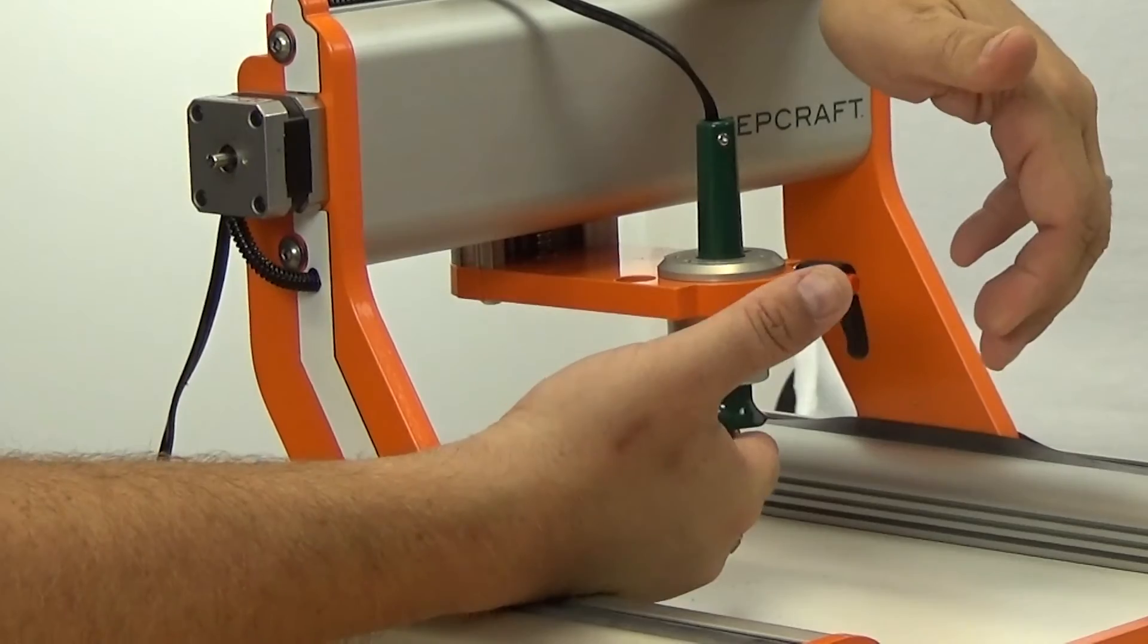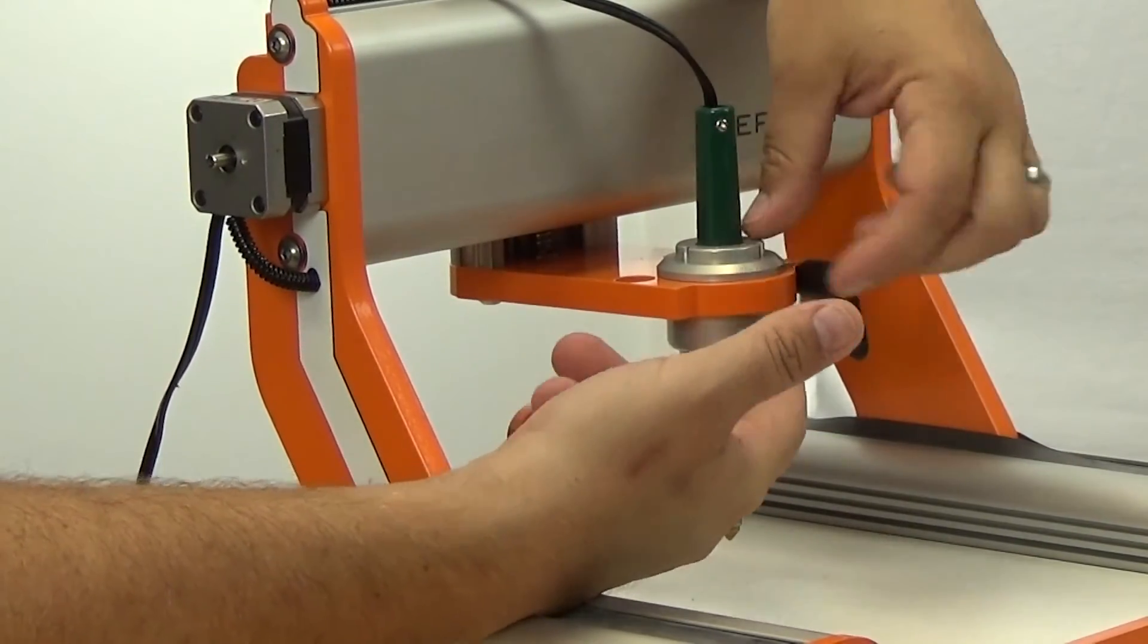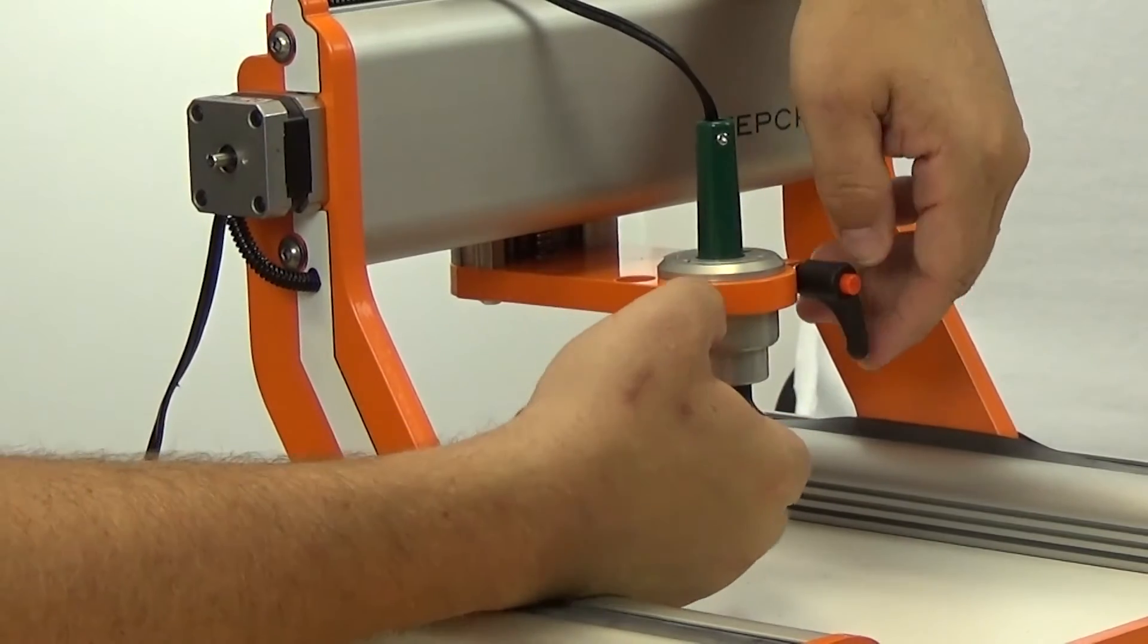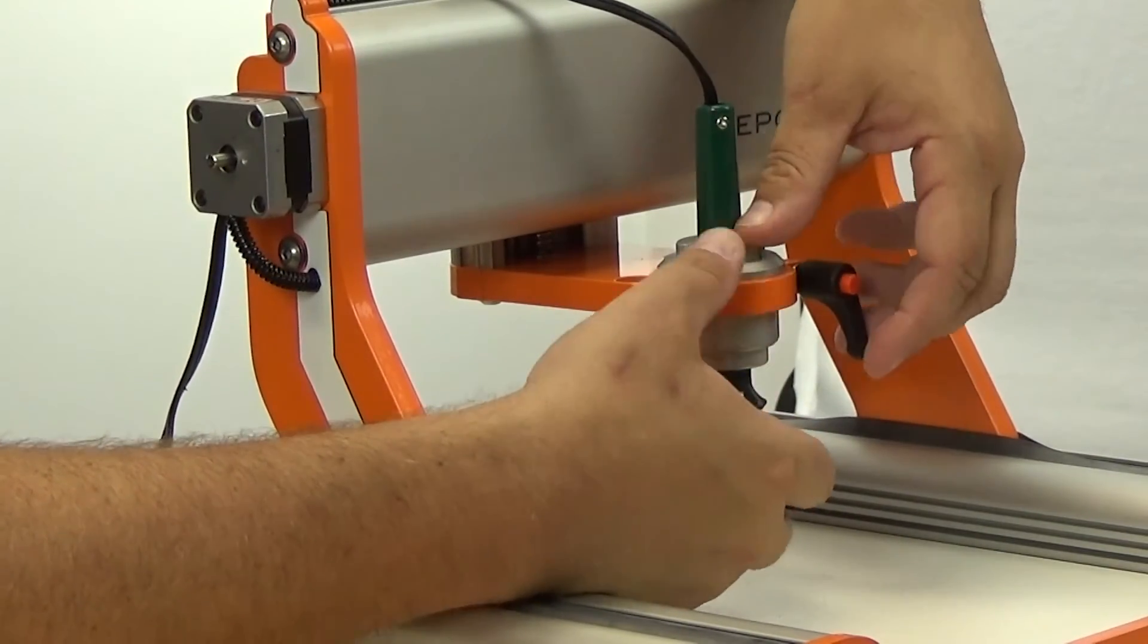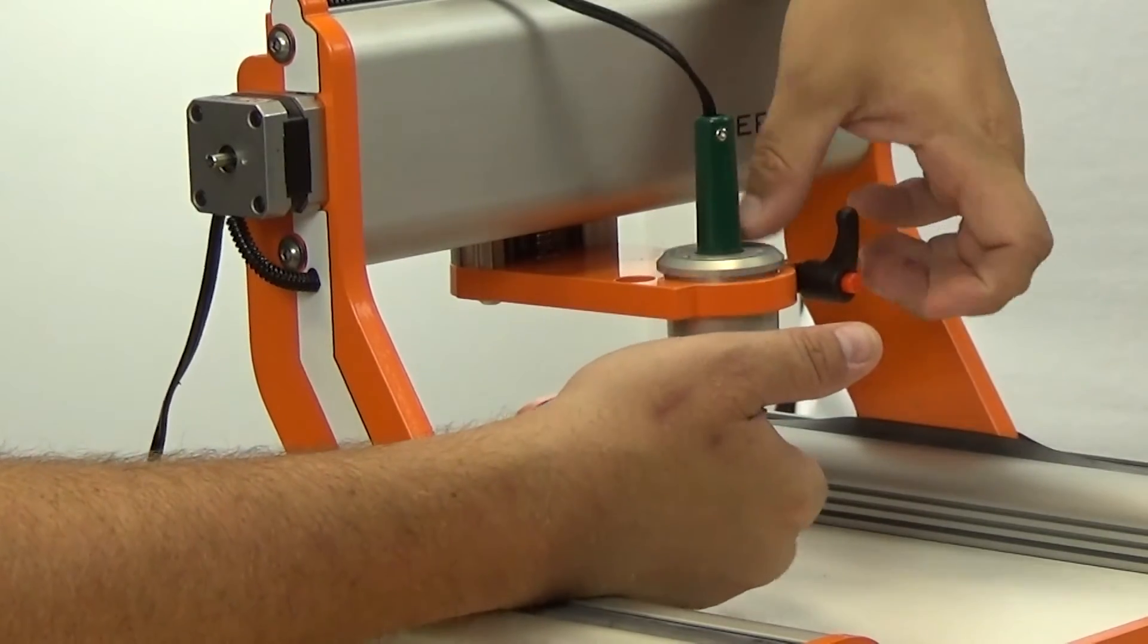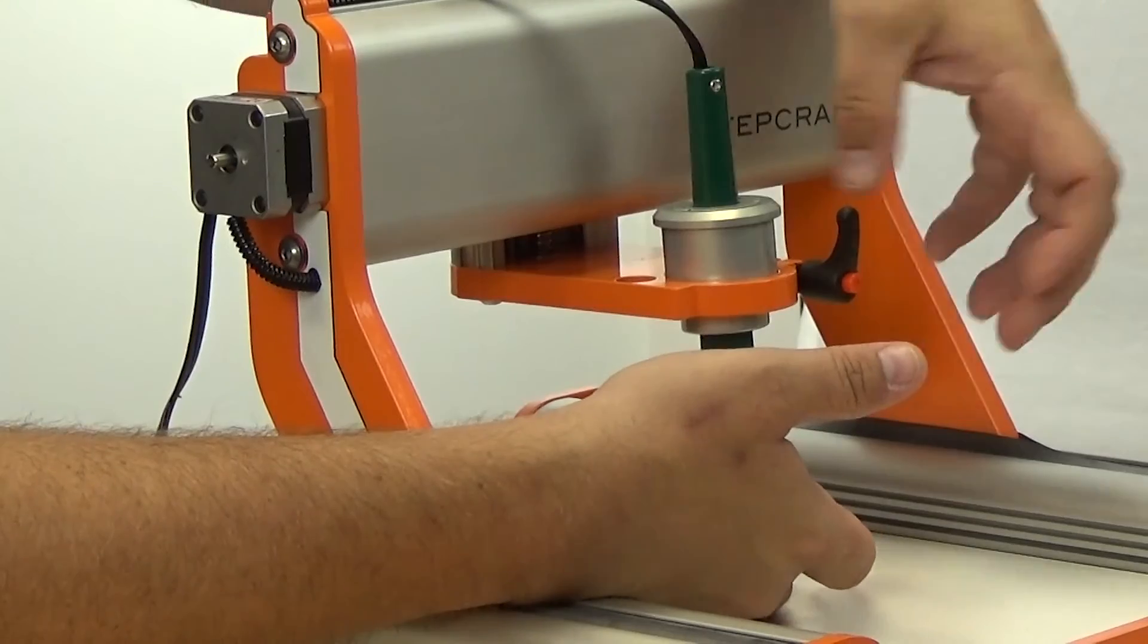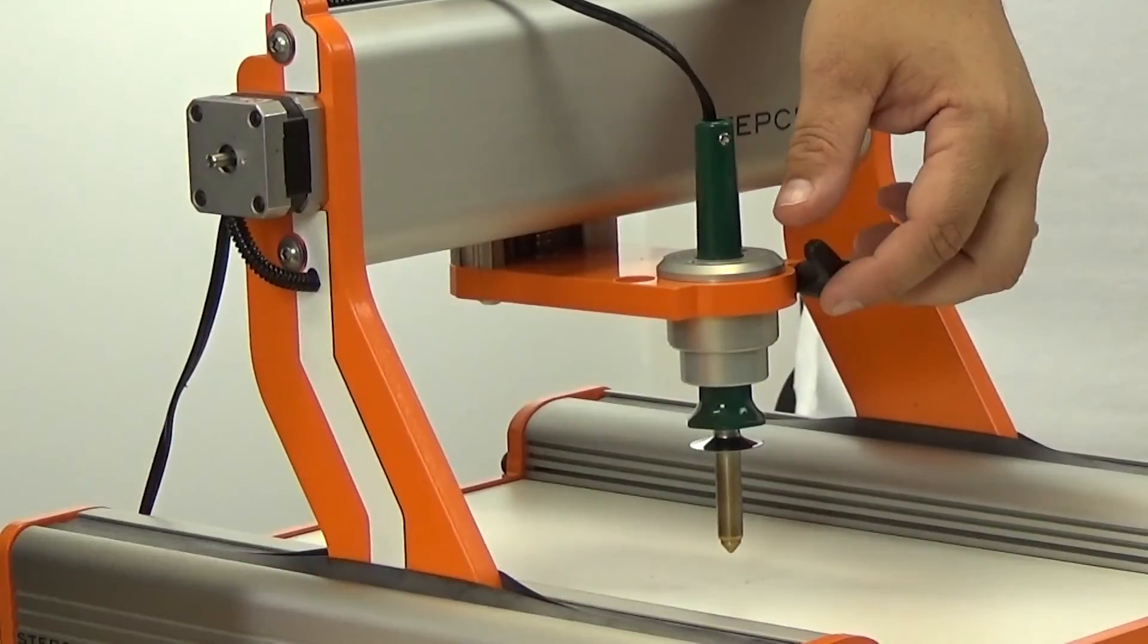If you tighten it too much, then what's going to happen is you're going to push this up and it's not going to retract. Remember this is spring loaded, so it should push back down. If it's too loose, then what's going to happen is when you lower this to touch the work material, the whole unit is going to pop right out and you don't want that either.